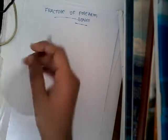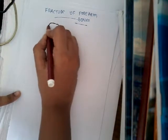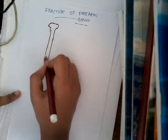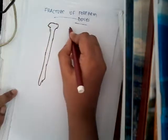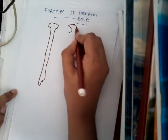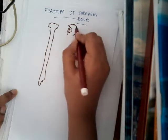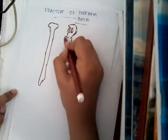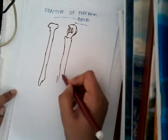So what are the forearm bones? This can be ulna or radius. This is the radius, or this can also be ulna.